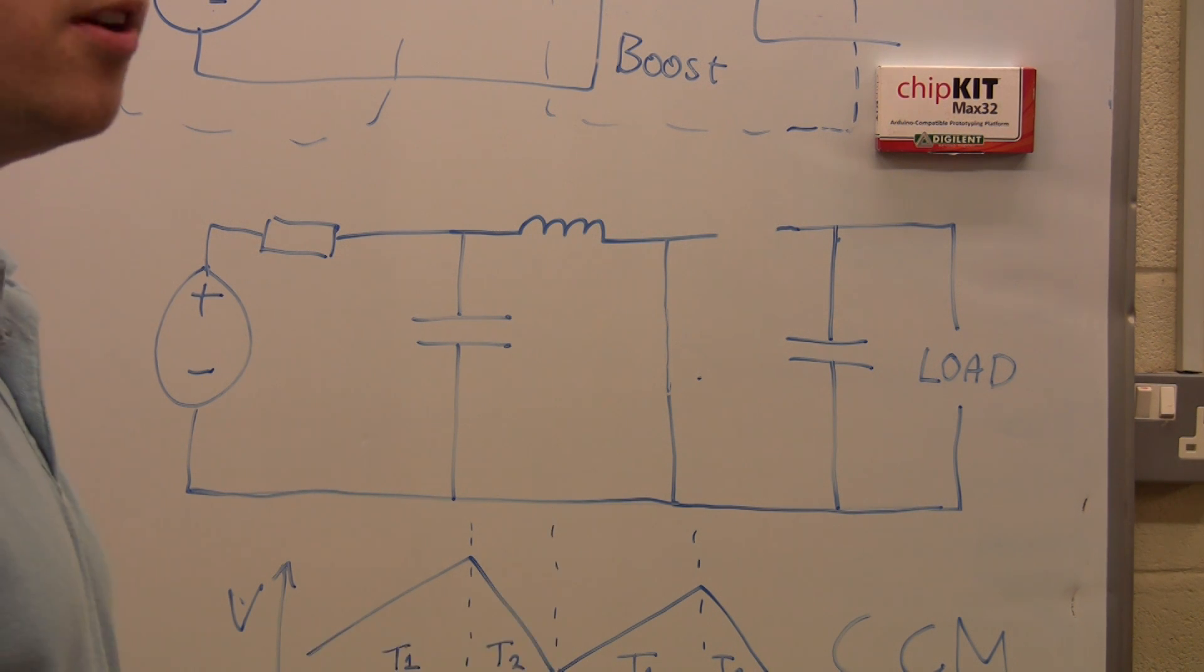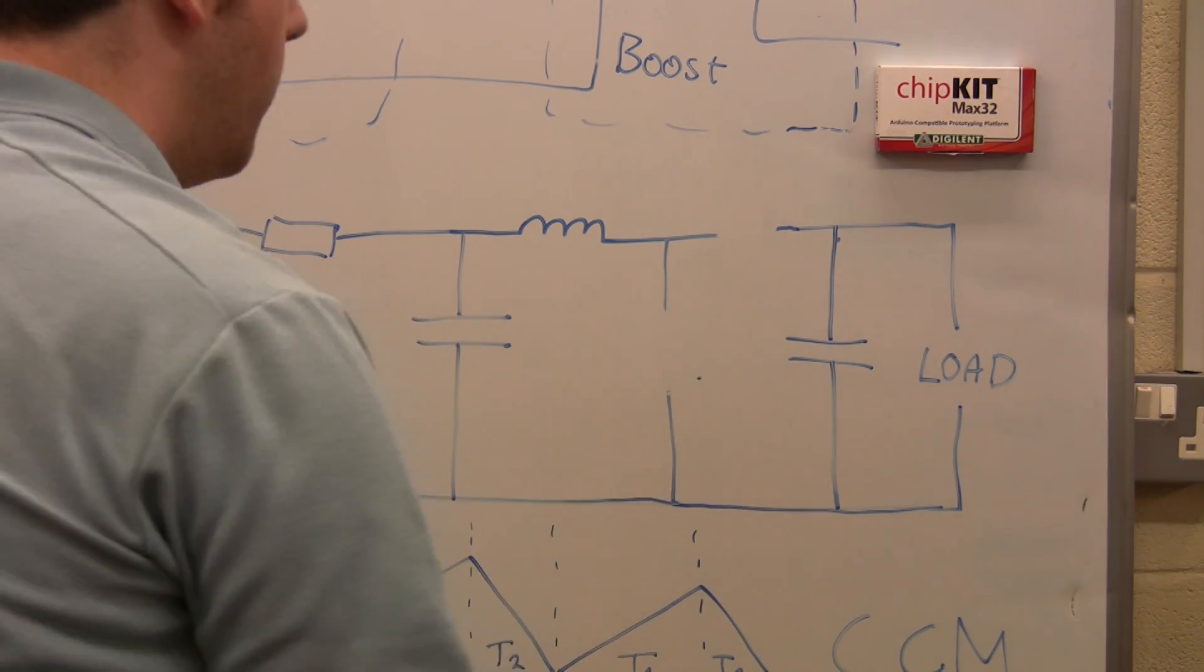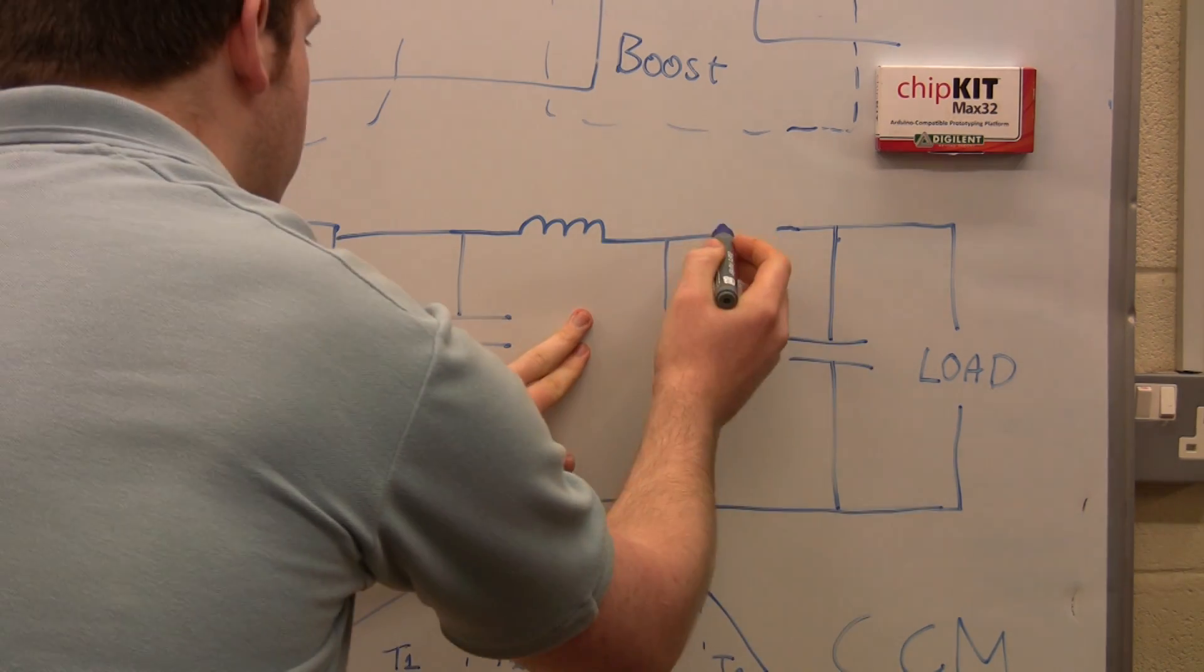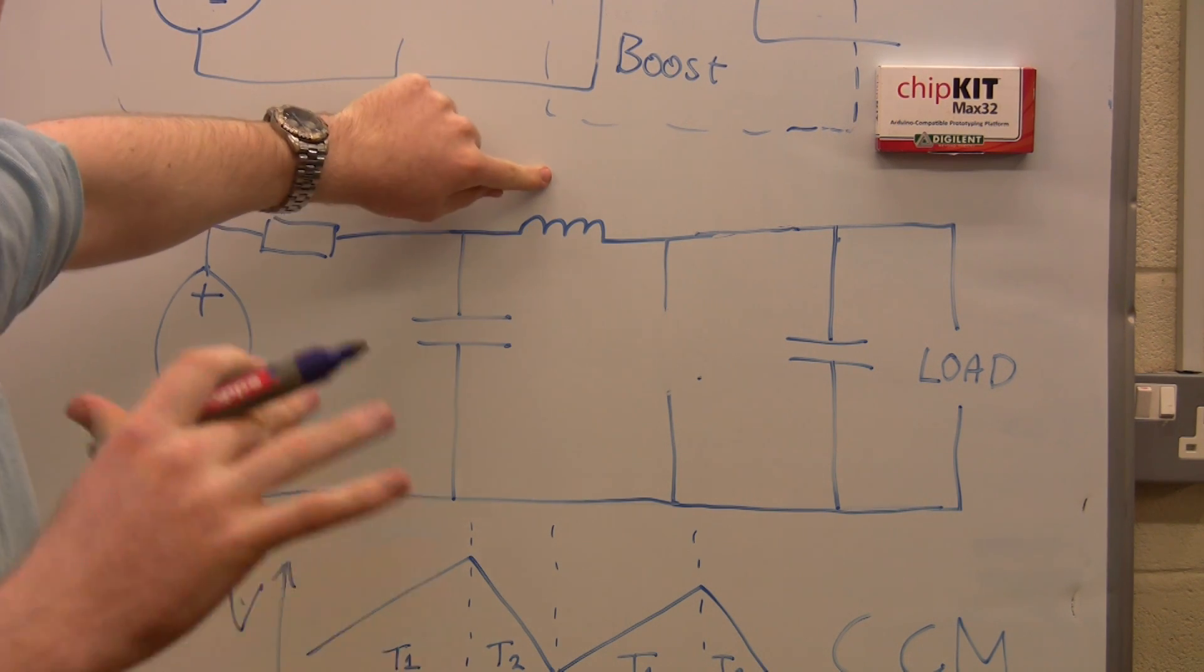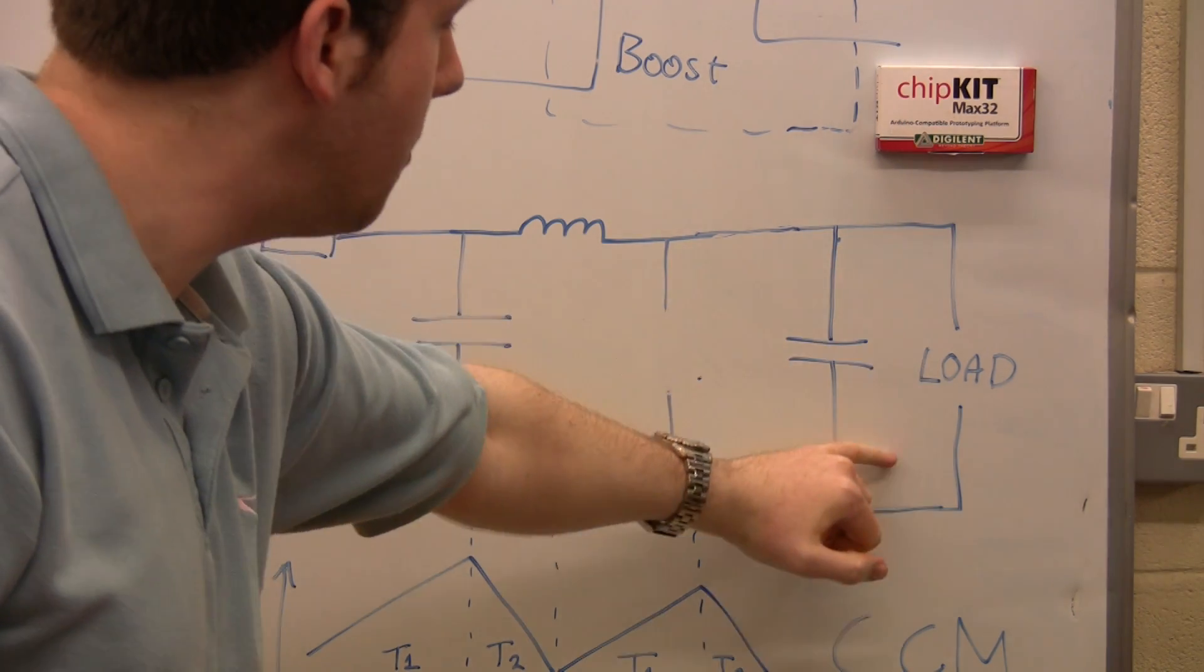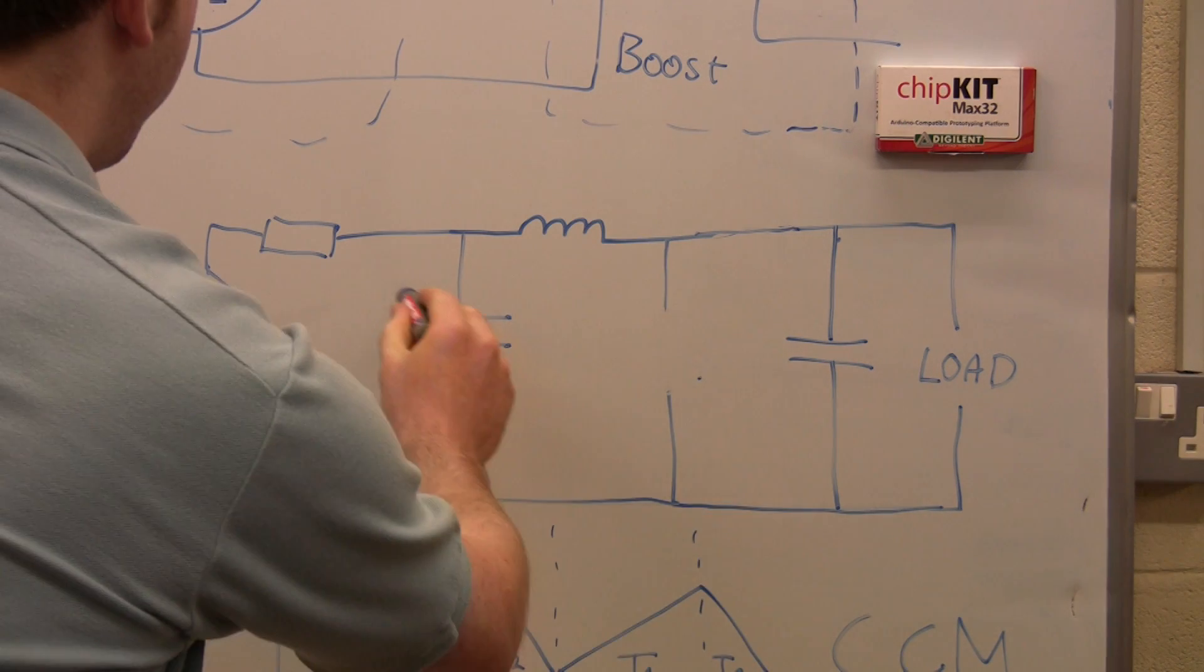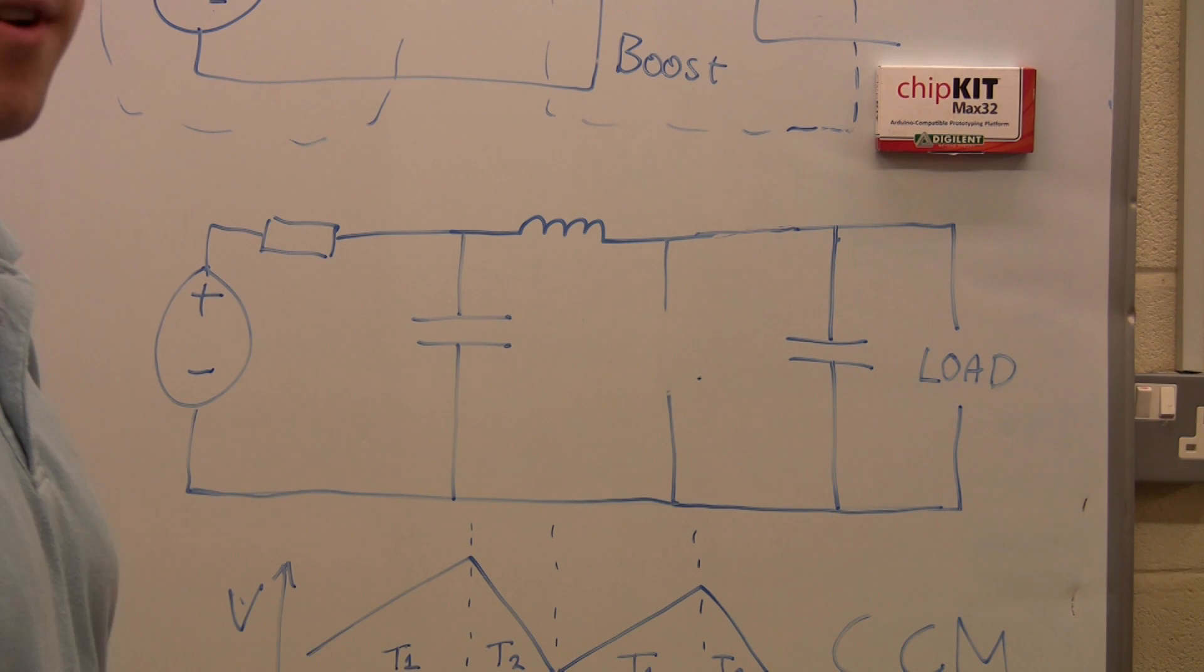Let's take it into state two. Let's turn off our switch. This goes open circuit, and suddenly the diode starts conducting. This inductor wants the current to carry on flowing, so it pushes the current through here and out to the load, which also charges up this capacitor. The current flows through the load. We've got an increased voltage coming out and being delivered to the load, so we can control this voltage.